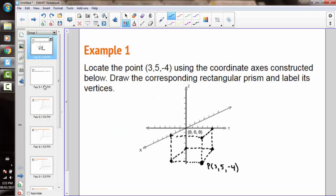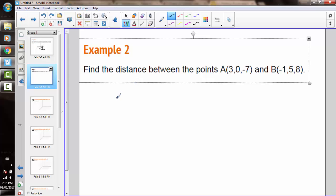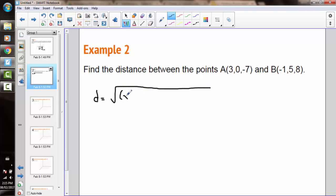So let's do that with the point (3, 0, -7) and (-1, 5, 8). My formula is the distance is equal to the square root of (x2 minus x1) squared, plus (y2 minus y1) squared, plus (z2 minus z1) squared.